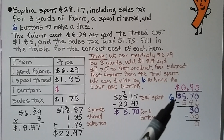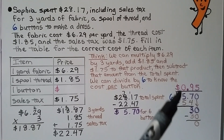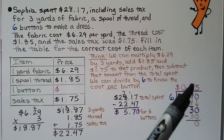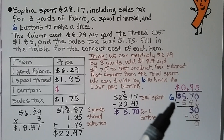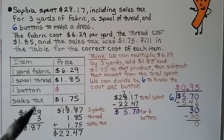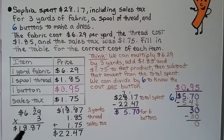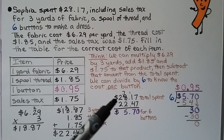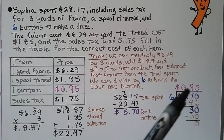Now we divide $5.70 by 6 to find the cost per button. 6 can't fit into 5, so we put a 0 in the dollar place. 6 fits into 57 nine times since 6 times 9 is 54; we subtract and get 3. We bring down the 0. 6 fits into 30 five times; 6 times 5 is 30; we subtract and get 0. Each button costs $0.95. There were many steps: multiply fabric price by yards, add thread and tax, subtract from total, then divide the remainder by 6 to get the price per button.